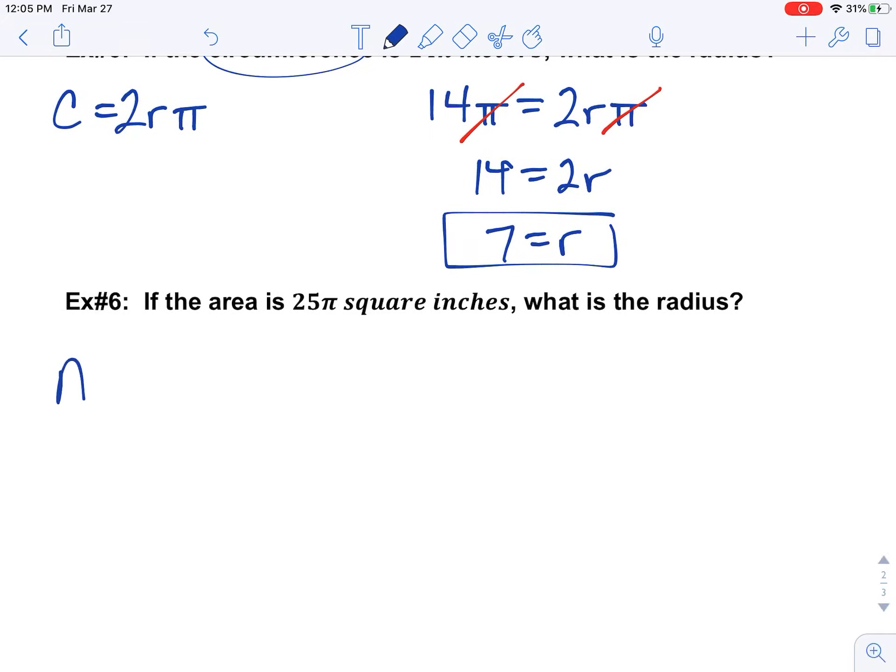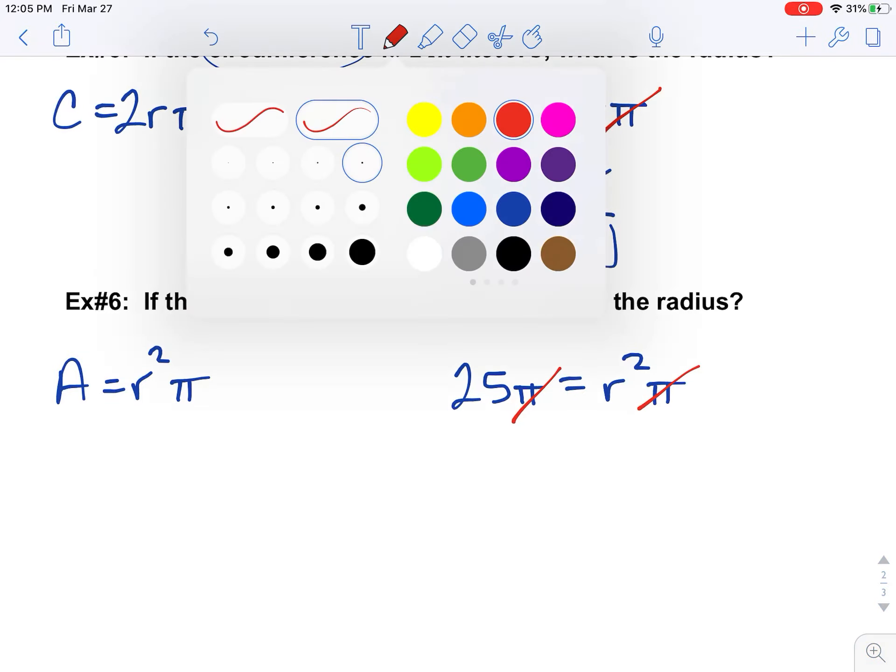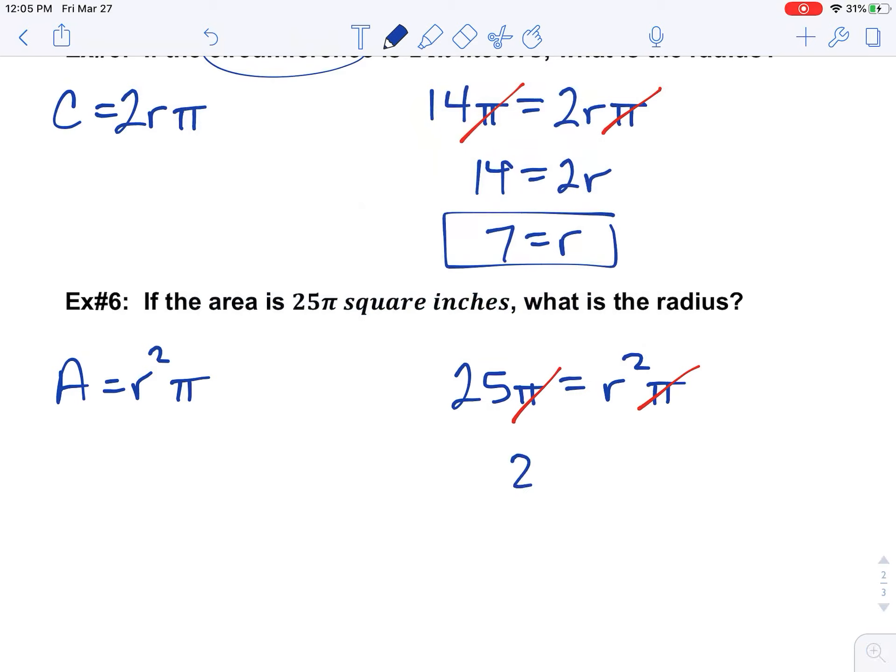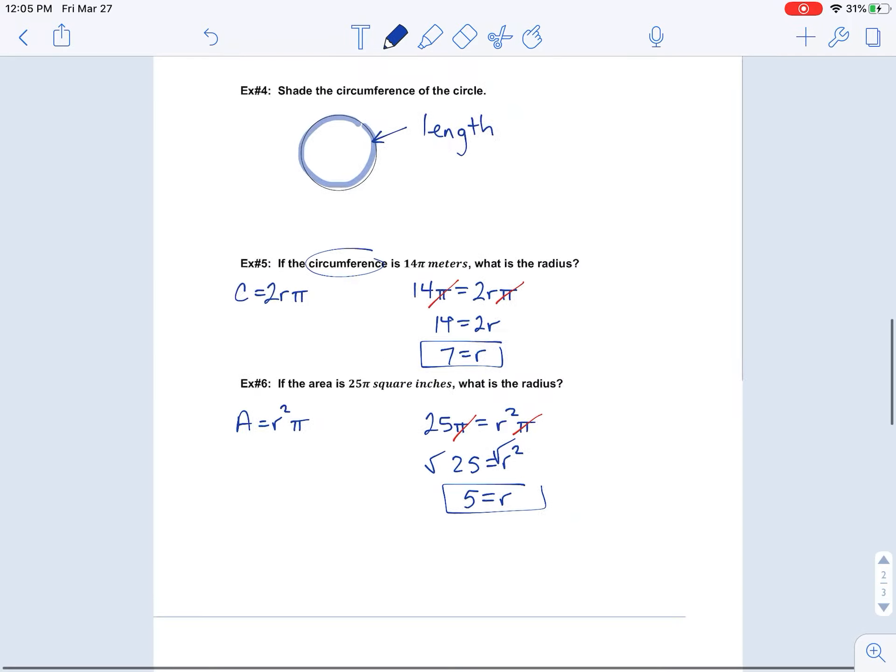For area, same thing. Area equals r²π, because we're going to leave it in terms of pi, and this is in terms of pi. So 25π equals r²π. Again, we can cancel out the letter pi, so now you're stuck with just 25 equals r². If I square root both sides, I get 5 equals r. And that is that.